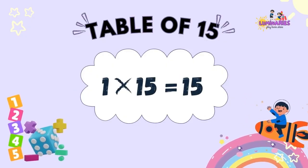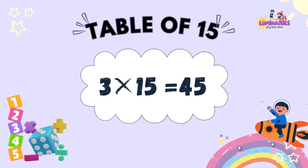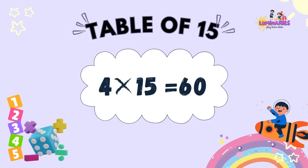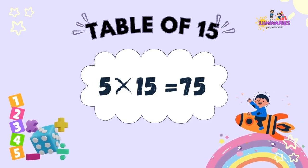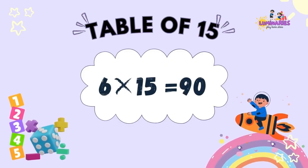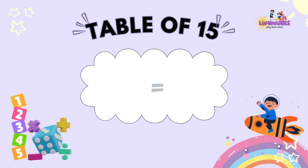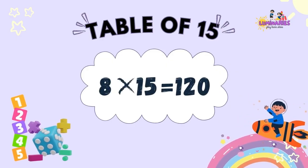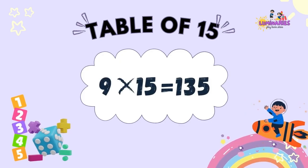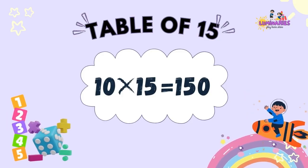Table of 15. 1 x 15 is 15. 2 x 15 is 30. 3 x 15 is 45. 4 x 15 is 60. 5 x 15 is 75. 6 x 15 is 90. 7 x 15 is 105. 8 x 15 is 120. 9 x 15 is 135. 10 x 15 is 150.